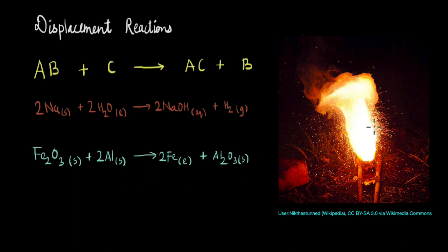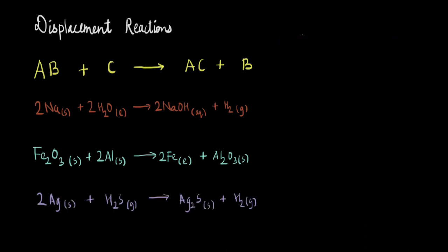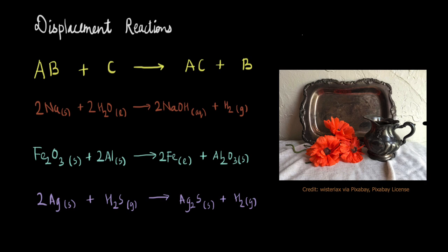And this reaction too, as you can see here, releases a lot of heat and leads to this combustion. Now yet another example is that of silver reacting with hydrogen sulfide to give Ag2S and hydrogen. Now this reaction may seem very unfamiliar to you right now, but you may have seen this reaction take place if you've seen old silverware that gets tarnished when exposed to atmosphere. So this tarnish that you see here, this is this Ag2S, which is forming when this silverware is exposed to the H2S in air. So all of these are examples of displacement reactions.